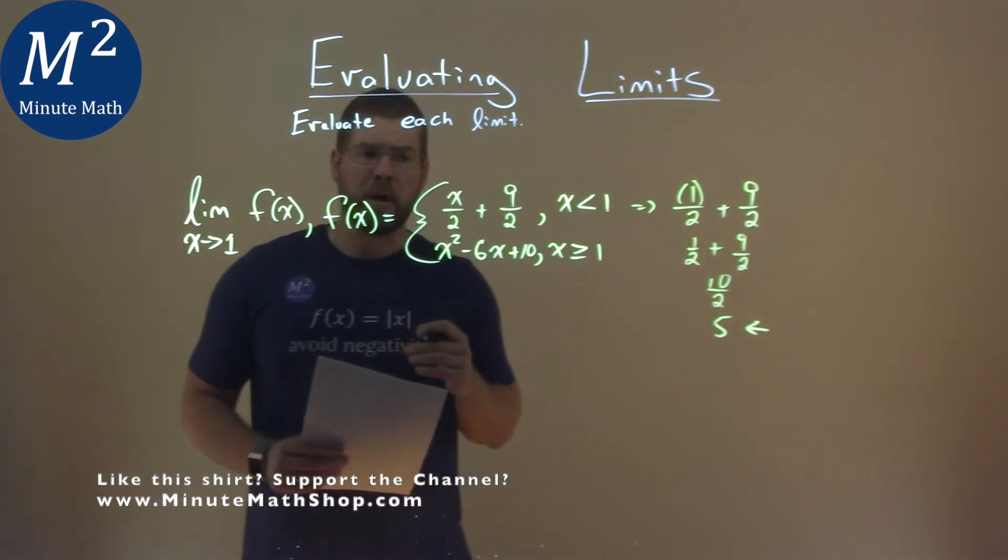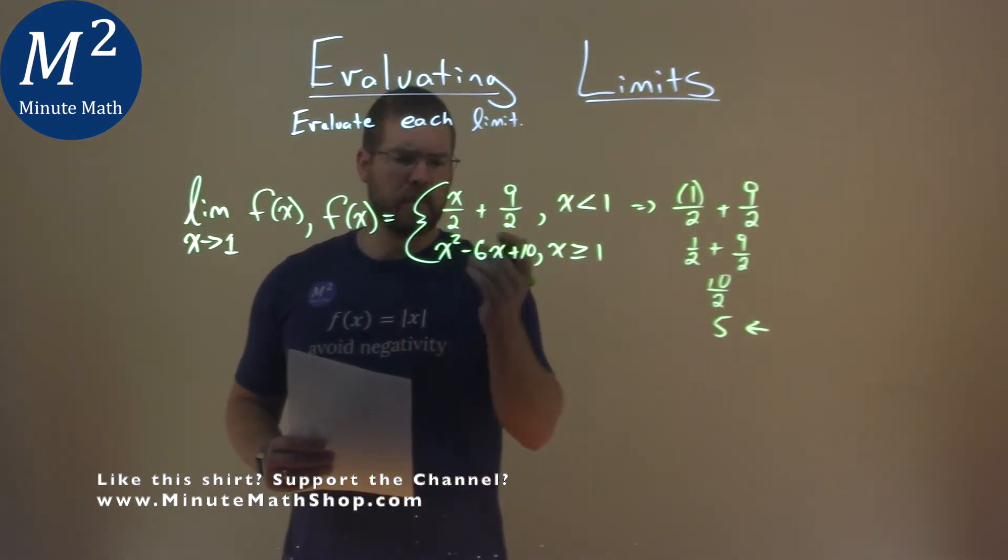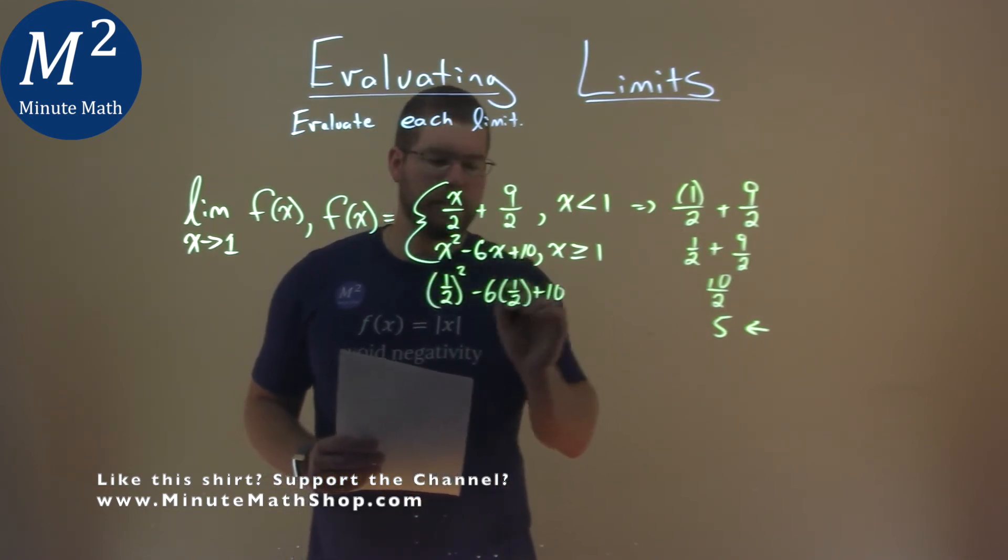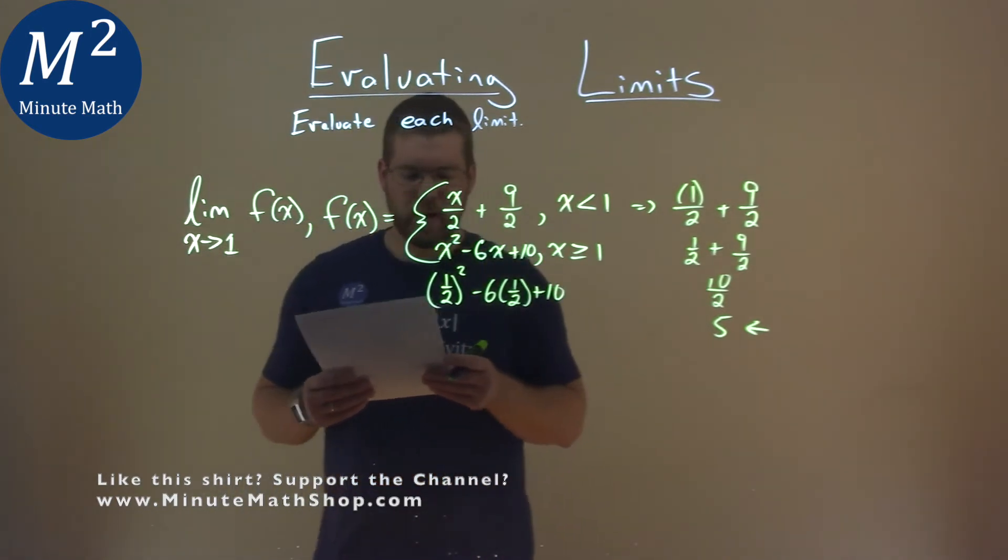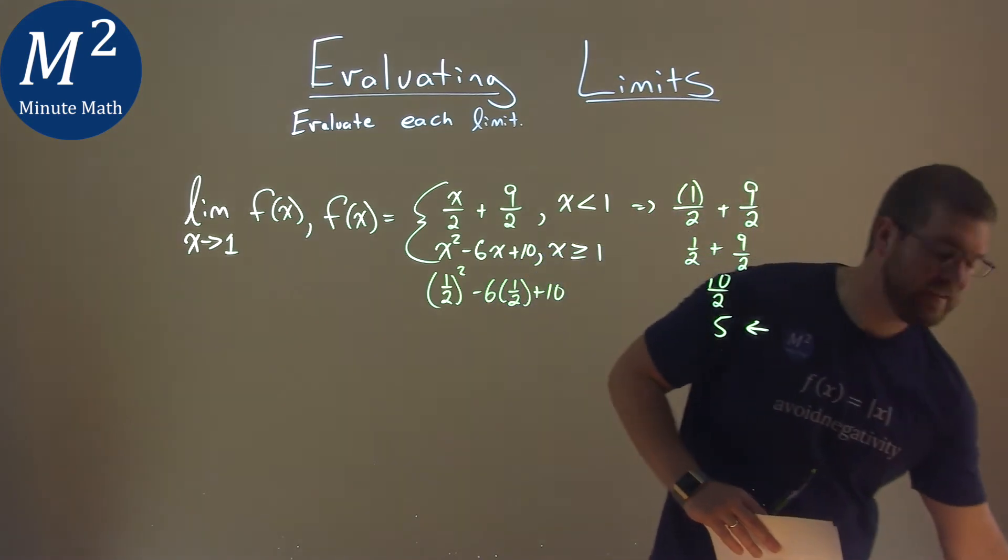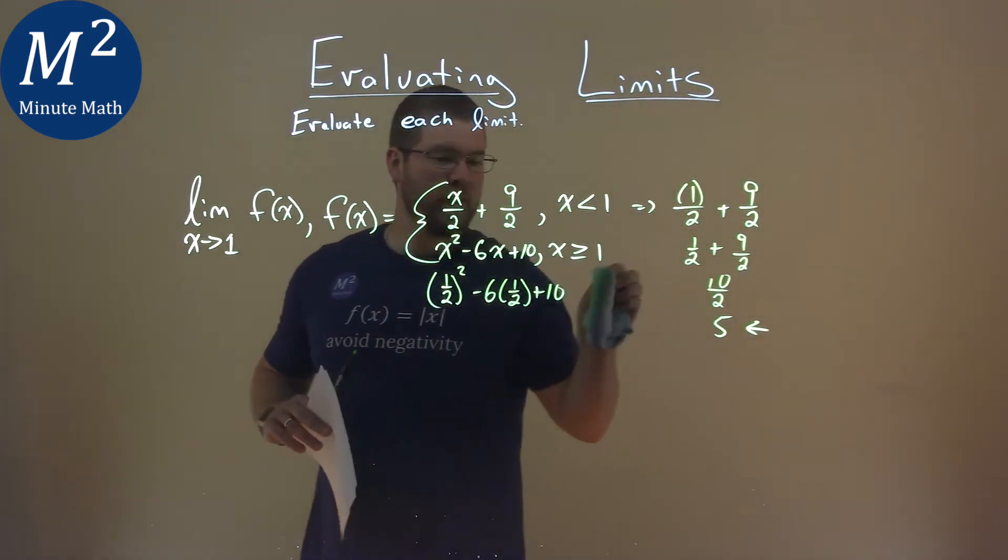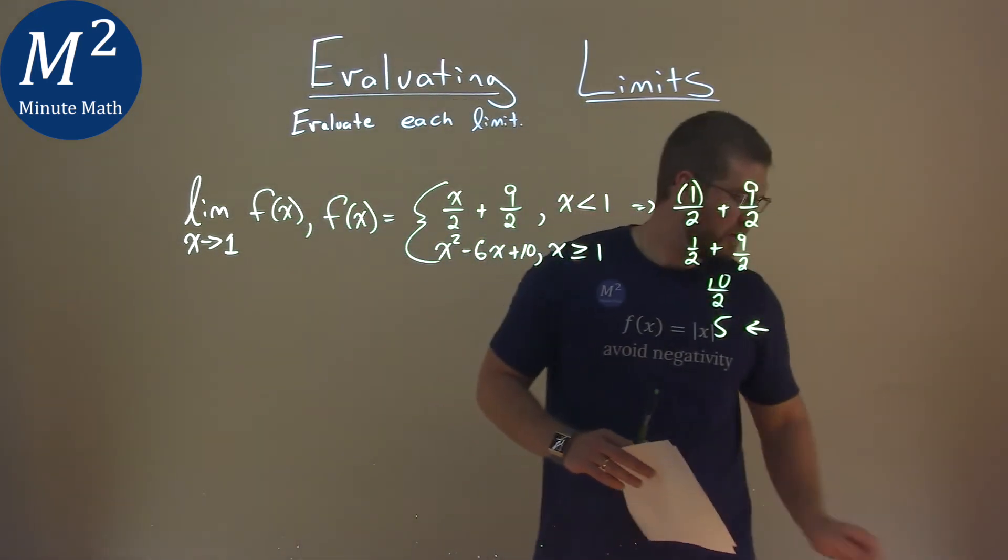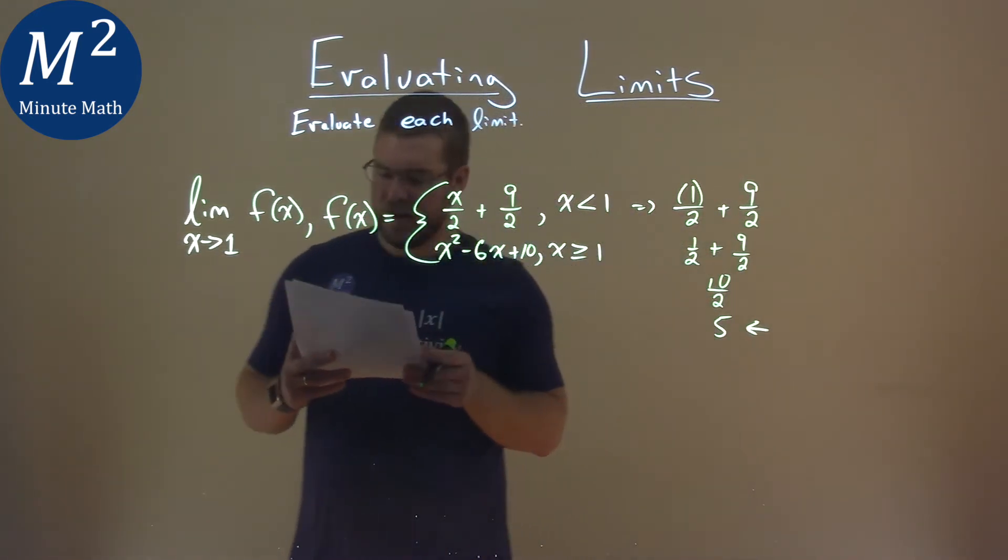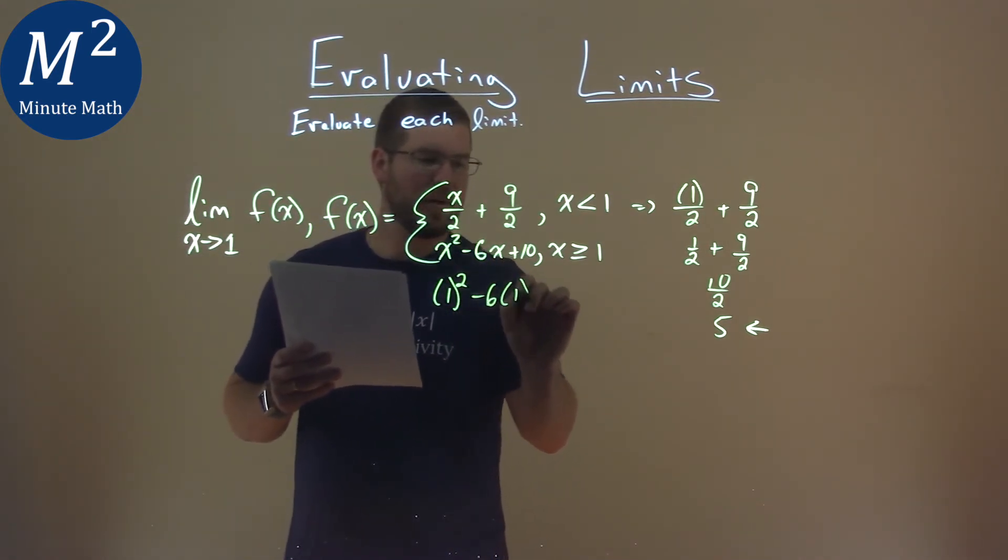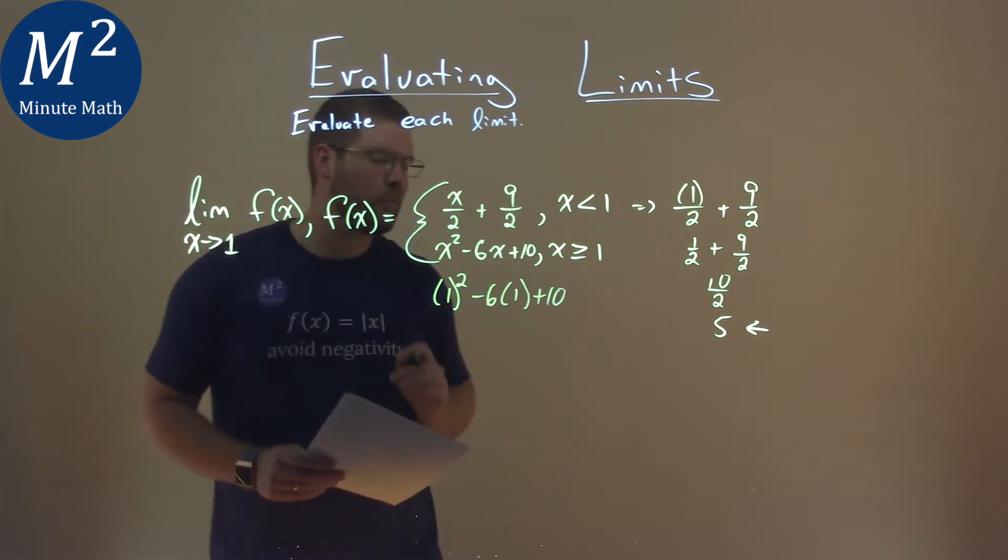But what about from the right? Let's go to the second equation. Again, we're going to put 1 for x. Oh sorry, not 1 half, 1 squared. I was thinking about the 1/2, but really it's 1. That would make a mistake right there, so don't do that. Good thing we caught it. We all make mistakes. Plug 1 in for x: 1² minus 6 times 1 plus 10. This is much easier now.